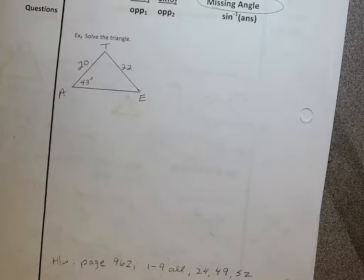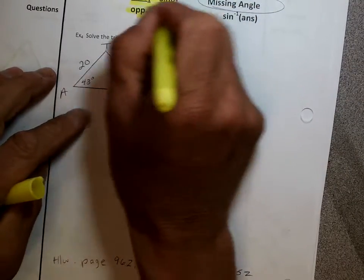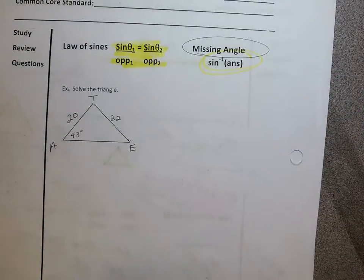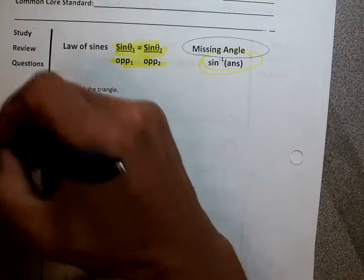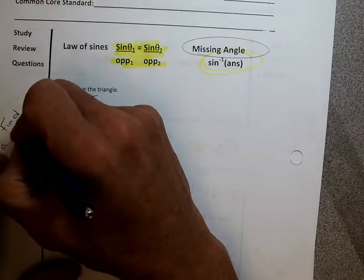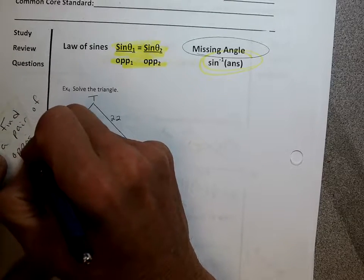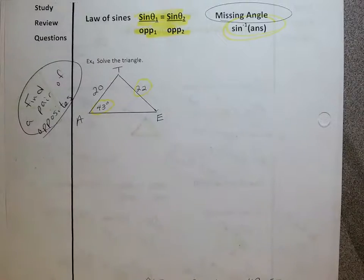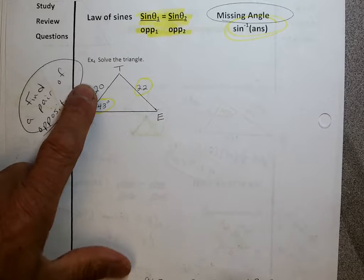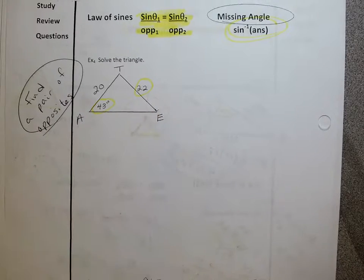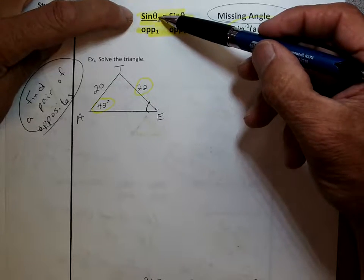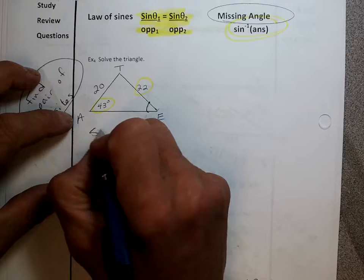Now, this is the missing angle problem. It's still the exact same formula, except it's upside down — that's the only difference. It's upside down because it makes it easier to solve. I do know I'm finding an angle, so the very last step is going to be a sine inverse. So first, find a pair of opposites — how about 43 and 22? And I see this 20, which means I should be able to find angle E. My notes say to put the sine of the angle on top. I like to put the unknown first: sine of E over 20 equals sine of 43 over 22.